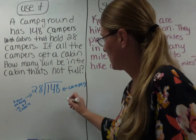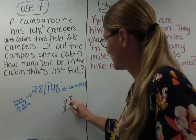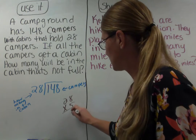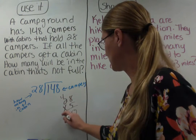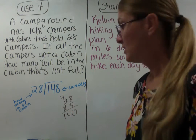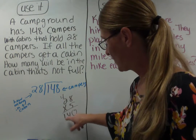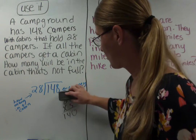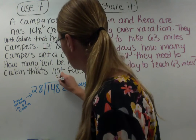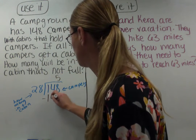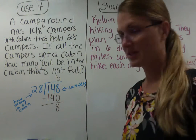How many times will we have to guess and check? Let's try 28 times 5 — let's remember what the answer was from yesterday. 8 times 5 is 40, carry the 4. 5 times 2 is 10, plus 4 is 140. So if we have five full cabins, those five full cabins will hold 140 campers. Five cabins holds 140 campers, which means we have eight campers left over.